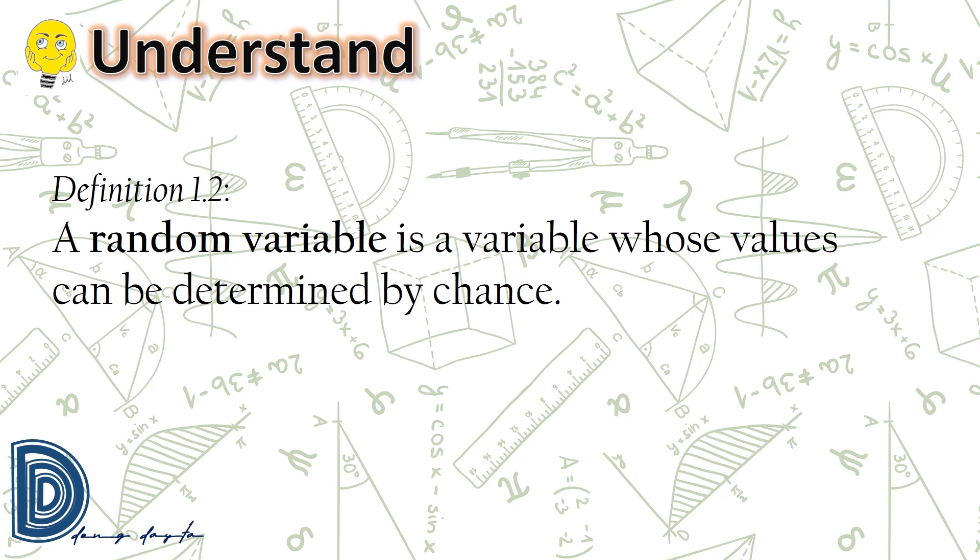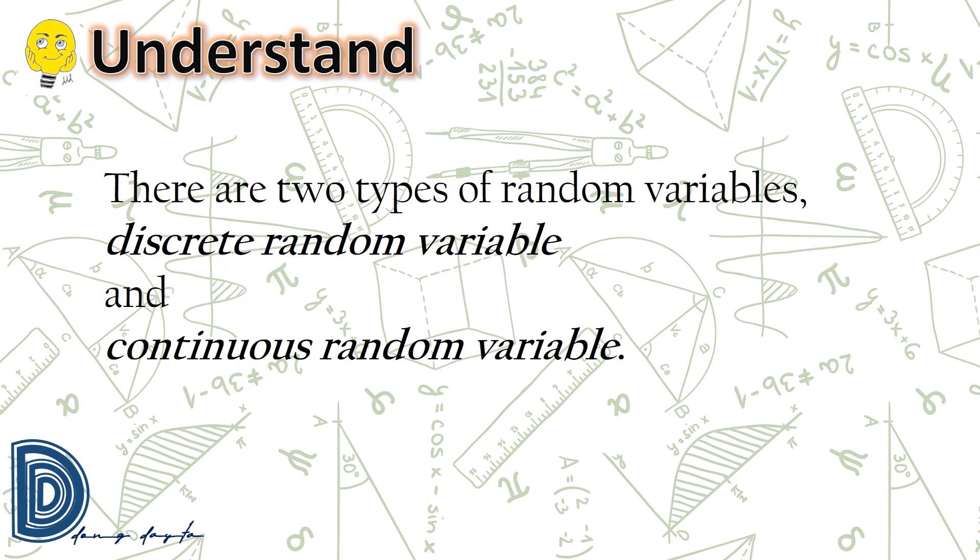Another one: we have random variable. A random variable is a variable whose values can be determined by chance. There are two types of random variables: discrete random variable and continuous random variable.